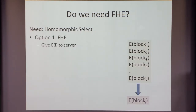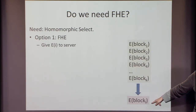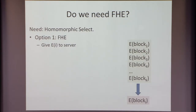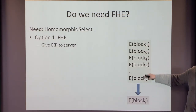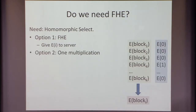Option one: with fully homomorphic encryption, I can encrypt the index i to the server, and the server can do a computation that produces an encryption of block i. With FHE or PIR, you could do this and you'd get an encryption of block i. One difference with PIR is that the number of blocks is not that big — it's still logarithmic. I'm just trying to shave that factor. Another option: use homomorphic encryption that supports just one multiplication. That's more like a concrete PIR. The main difference is I also need to compute again on the PIR output — that's why PIR is not good enough.